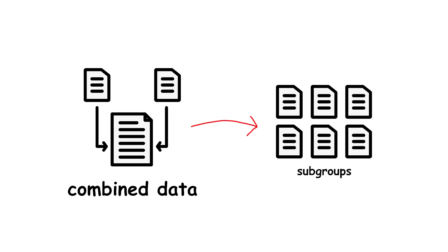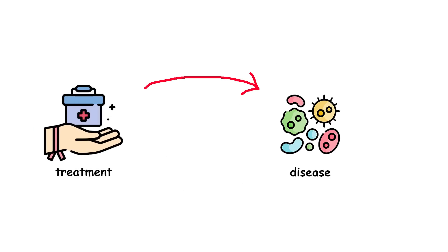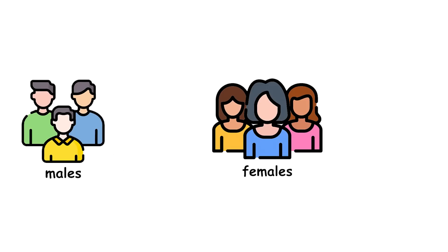This paradox occurs when trends observed in different groups of data reverse upon combining those groups. Assume that there is a new treatment for a disease. You look at two groups, both males and females.